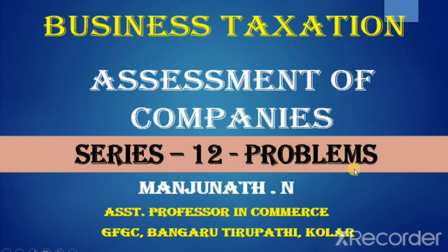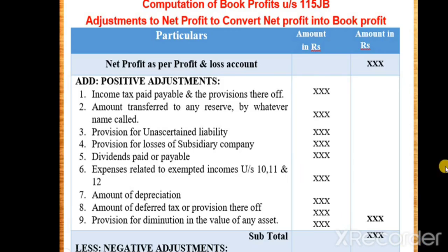In the assessment of companies series, in series 11 we have seen problems in step number one and two. In this series number 12, we will see the problems on computation of book profit and how to calculate the tax on book profits. In step number three, we have to calculate book profit under Section 115JB.